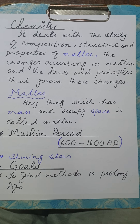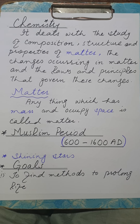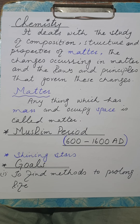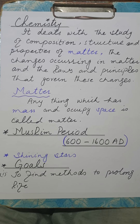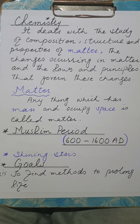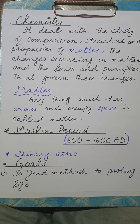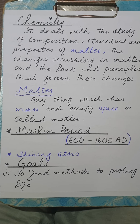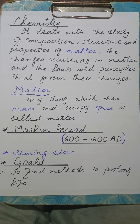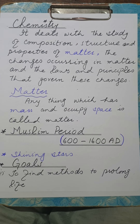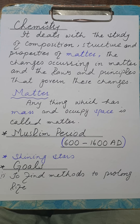We have two types of changes: physical changes and chemical changes. Physical changes are those changes in which no new substances are formed, and physical changes are reversible. For example, the melting of ice is an example of a physical change in which no new substance is formed — just the state of the matter is changed.